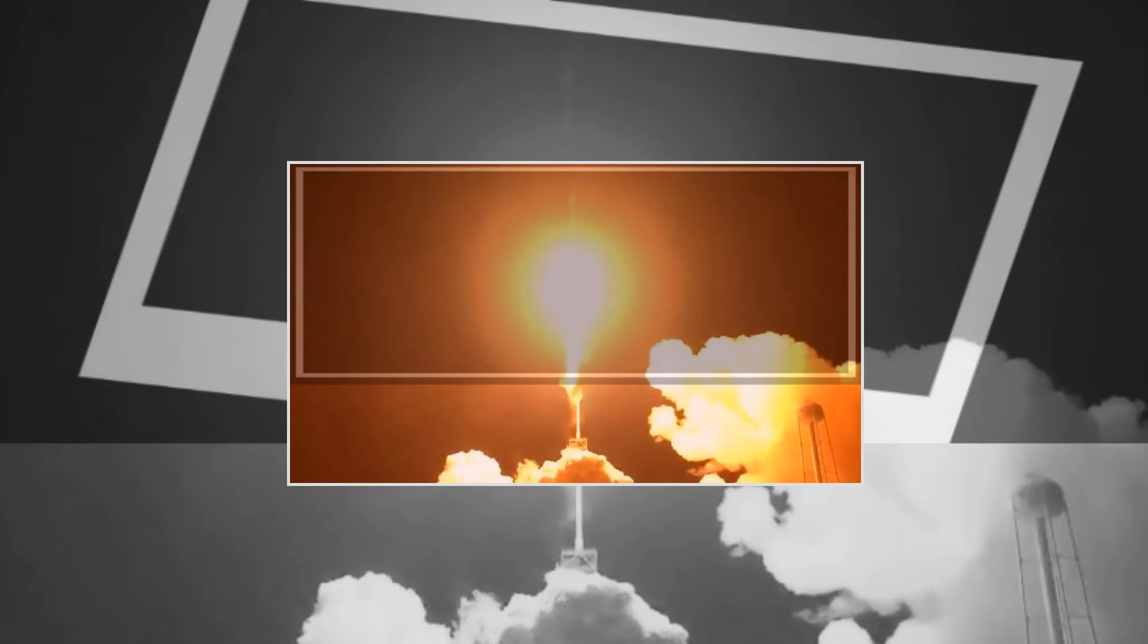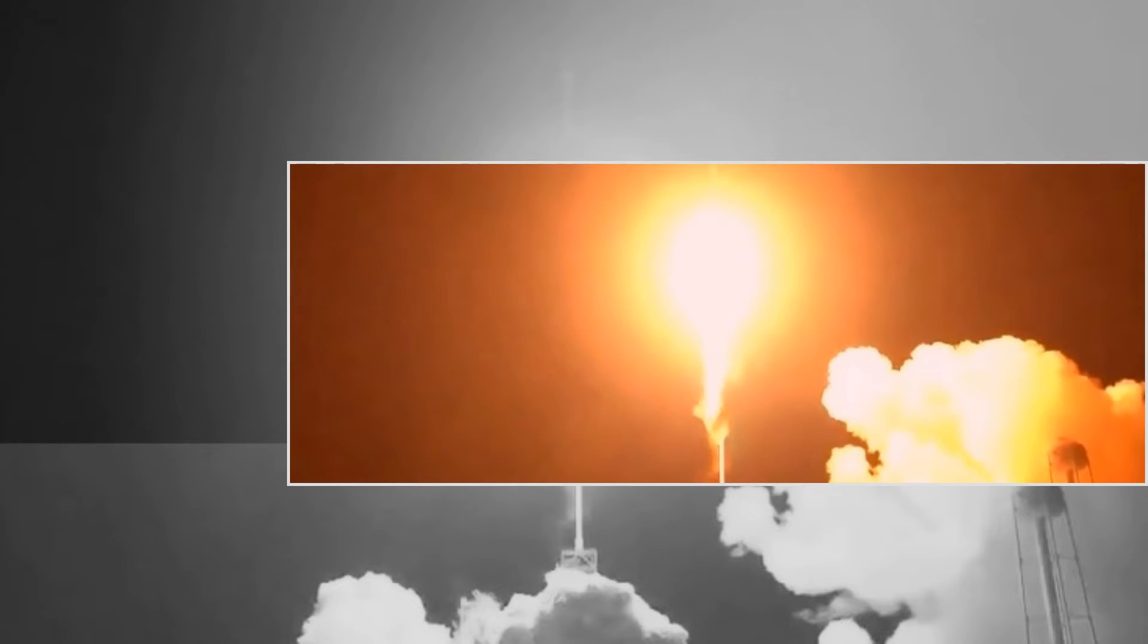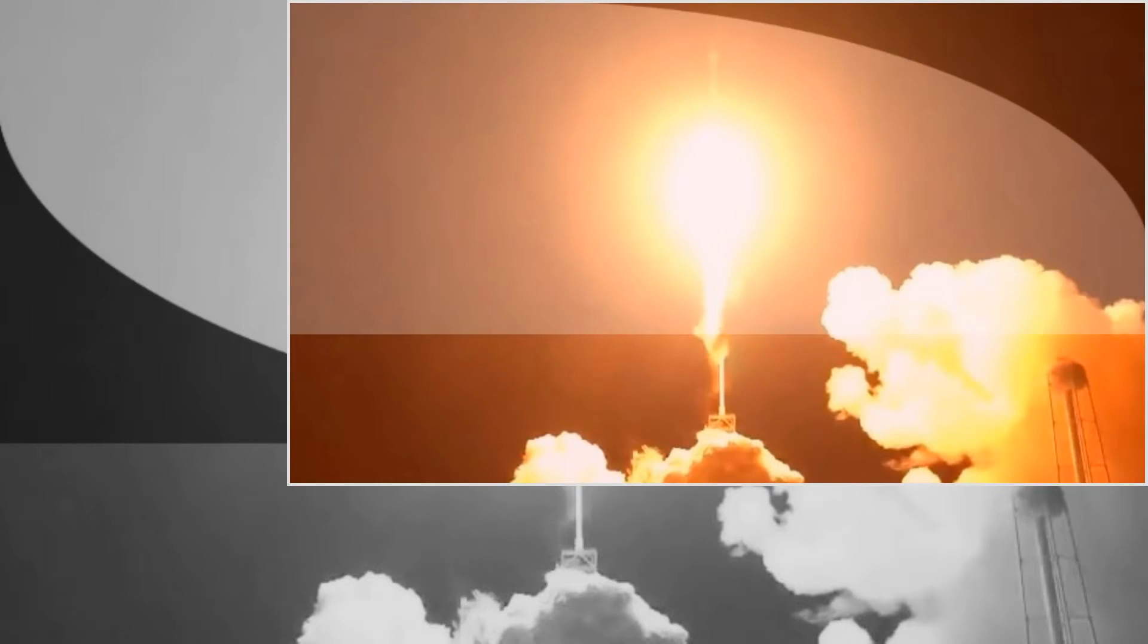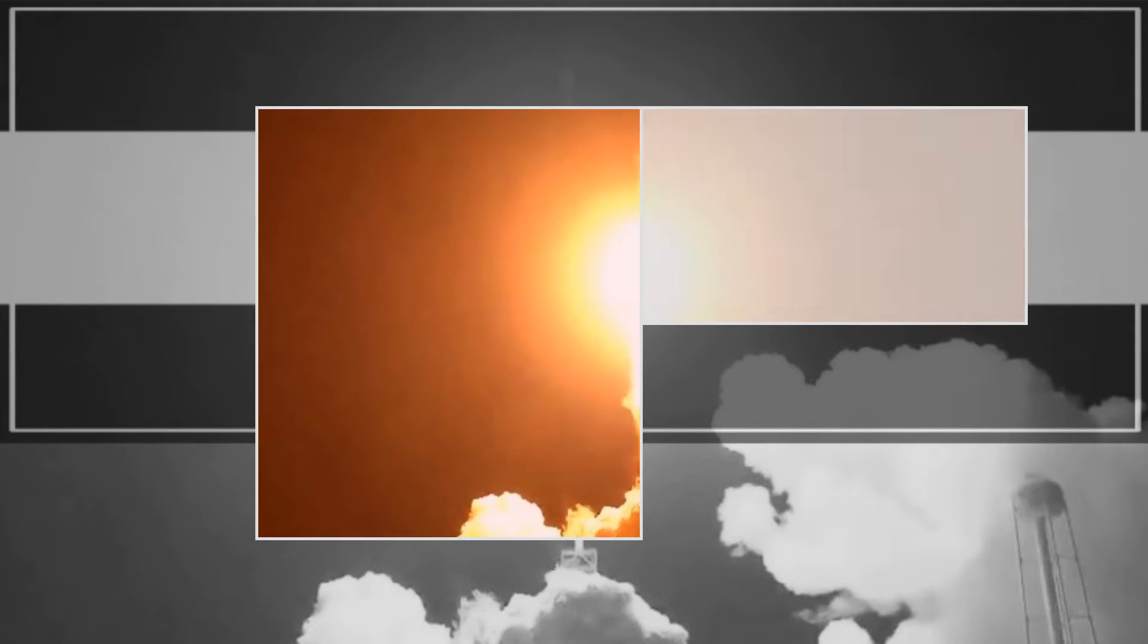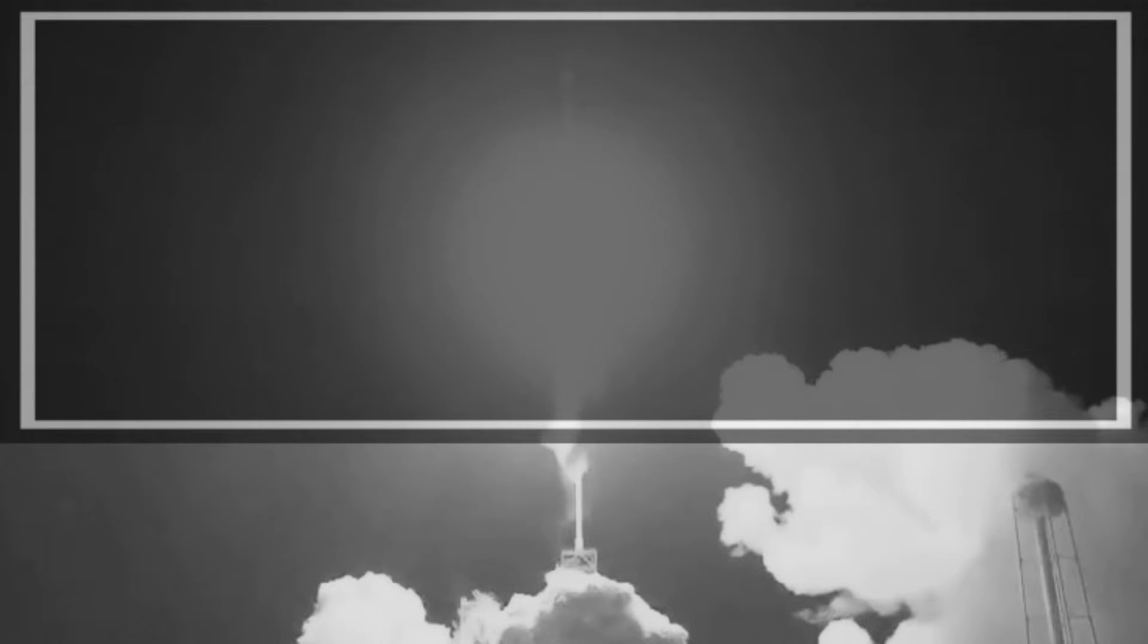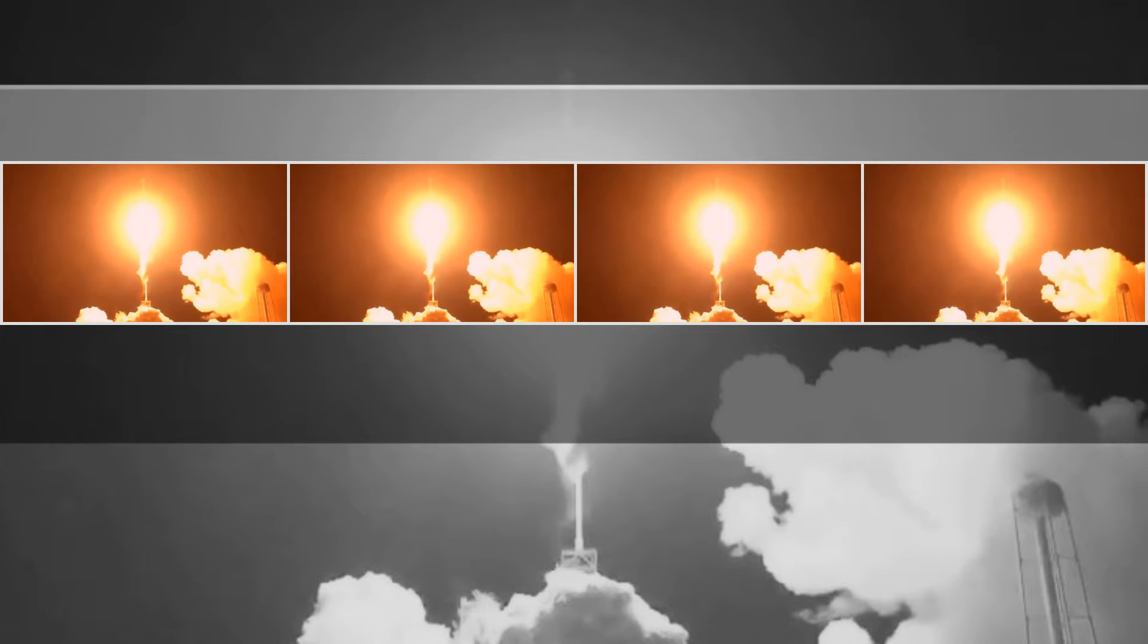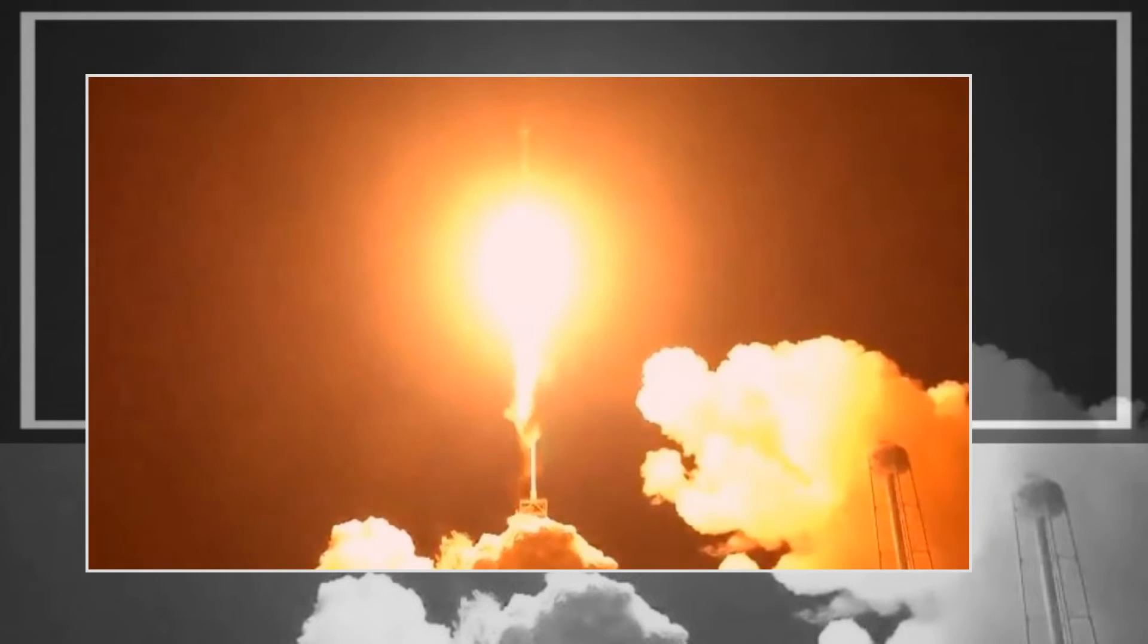After delay, SpaceX launches Echo Star satellite but forgoes rocket landing. For the second time in a week, weather worries caused a delay in SpaceX's launch of the Echo Star 23 communications satellite, but this time liftoff took place less than a half hour later than planned.